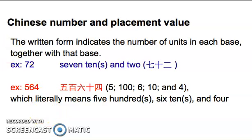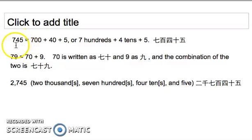Let me give you a couple more examples. Seven hundred and forty-five. There is seven hundred, there is a forty, there is a five. So seven hundreds, four tens, and five. So qi bai, seven hundred, si shi, four tens, and then wu, five. Qi bai si shi wu will be a written form for seven hundred and forty-five.